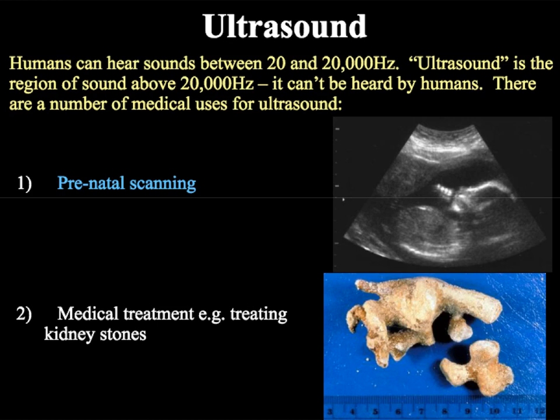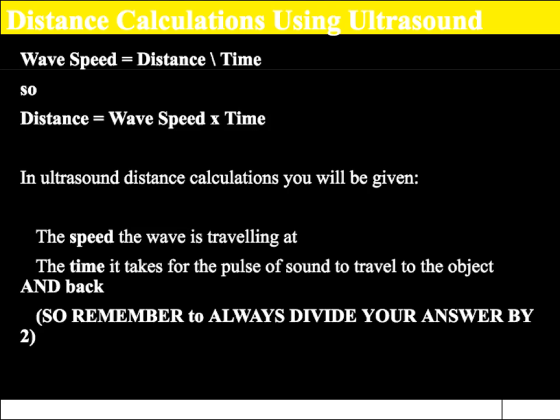In order to do this, we need to be able to work out the calculations. From P1, you should remember this equation, where the wave speed equals distance divided by time, so therefore distance equals wave speed times time. When we are working out an ultrasound distance, we need to be able to work out the speed and the time it takes for the pulse of sound to travel to the object and back. Because we will be looking at an echo, we need to make sure we divide our answer by two. We will now look at an example ultrasound calculation question.